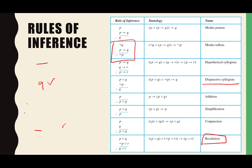That's called the disjunctive syllogism. Then there's addition — this one's a no-brainer: if P is true, then P or Q is true. That's a silly-seeming rule, but it can come in useful in a proof.